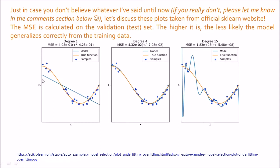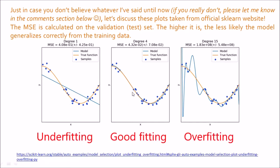This is a degree-4 polynomial — now I am trying to map the input data correctly. And this is a degree-15 polynomial — now it is trying to map every single input data point. Which of these is the underfitting, overfitting, and good fit model?